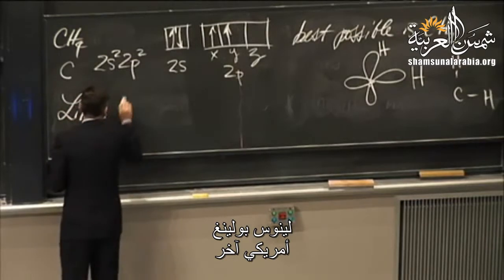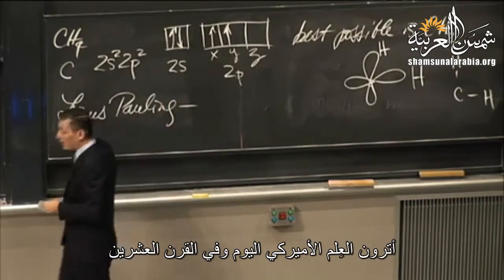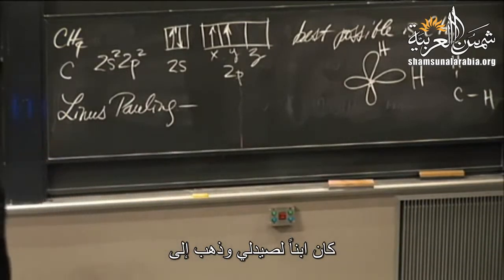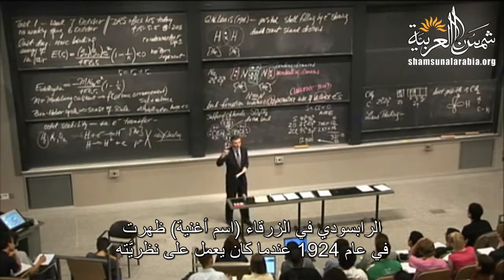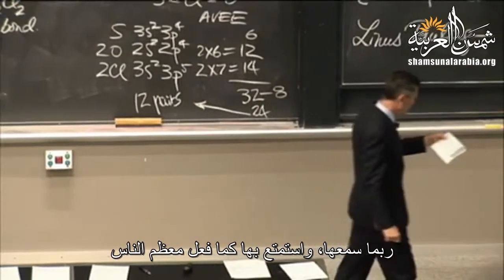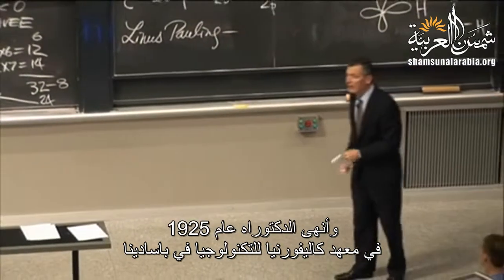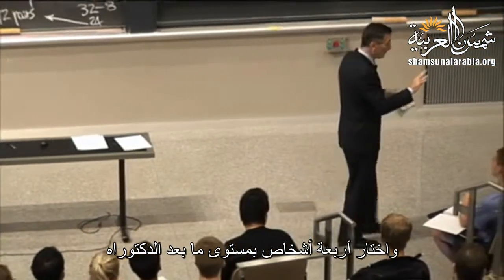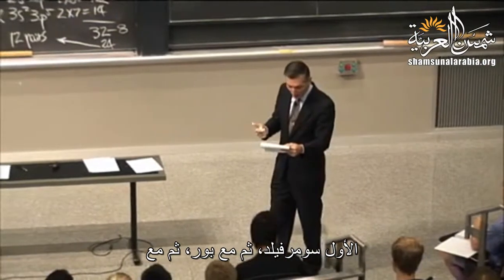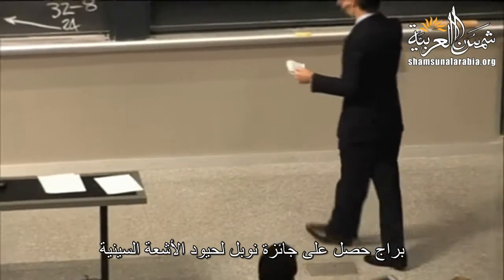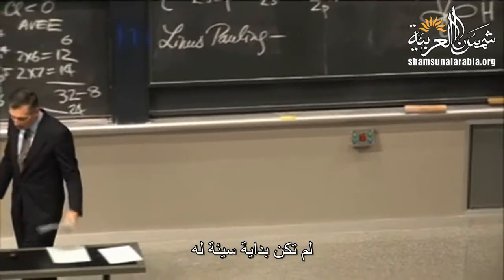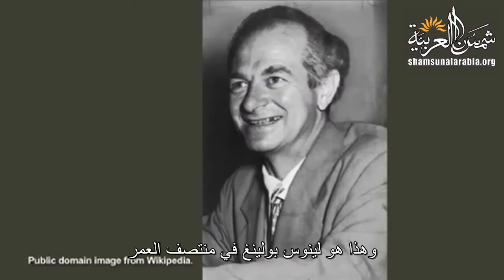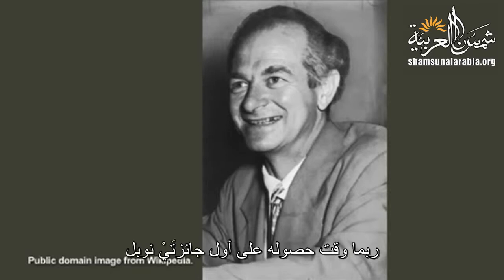The patch comes from Linus Pauling. Pauling was born in Portland, Oregon, the son of a pharmacist. He got his PhD from Caltech in 1925, then went to Europe for four postdoctoral positions — with Sommerfeld, then Bohr, then Schrödinger, and then finally with Bragg, who got the Nobel Prize for X-ray diffraction. Pauling then came back and taught at Caltech. He went on to win the first of two Nobel Prizes.